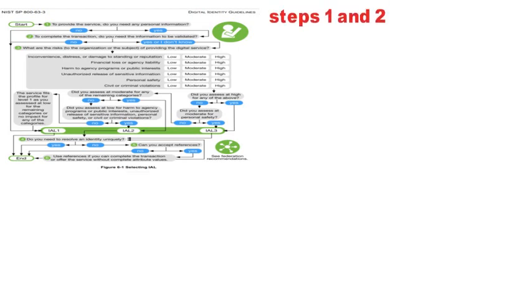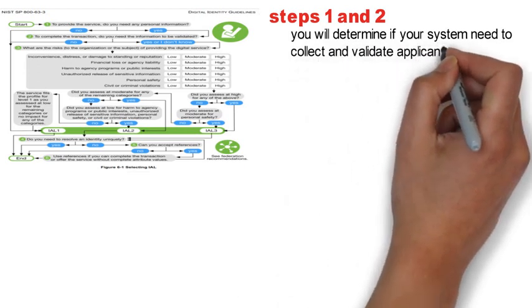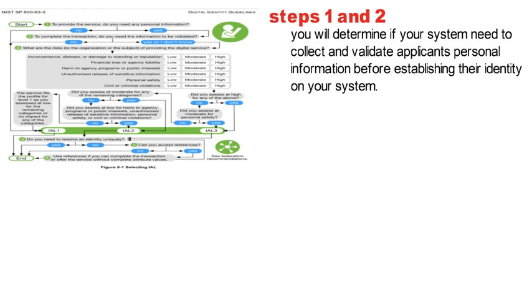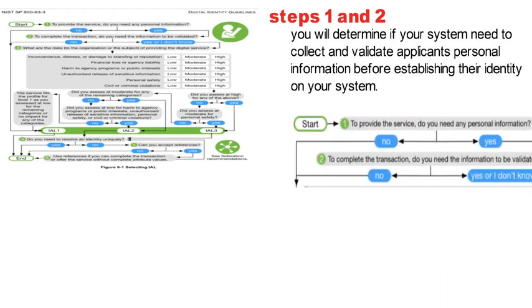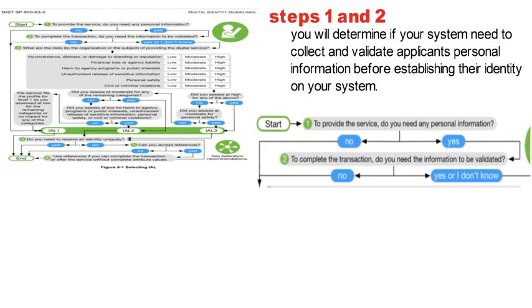This diagram shows how we can determine the Identity Assurance Level, IAL. You can find this in section 6.1 of the NIST 800-63-3 publication. I recommend you have the full chart on hand so you can follow along. In steps one and two, you will determine if your system needs to collect and validate applicants' personal information before establishing their identity on your system. Personal information is any information about an individual that can be used to distinguish or trace an individual's identity. If no personal information is required, your identity assurance level is one.